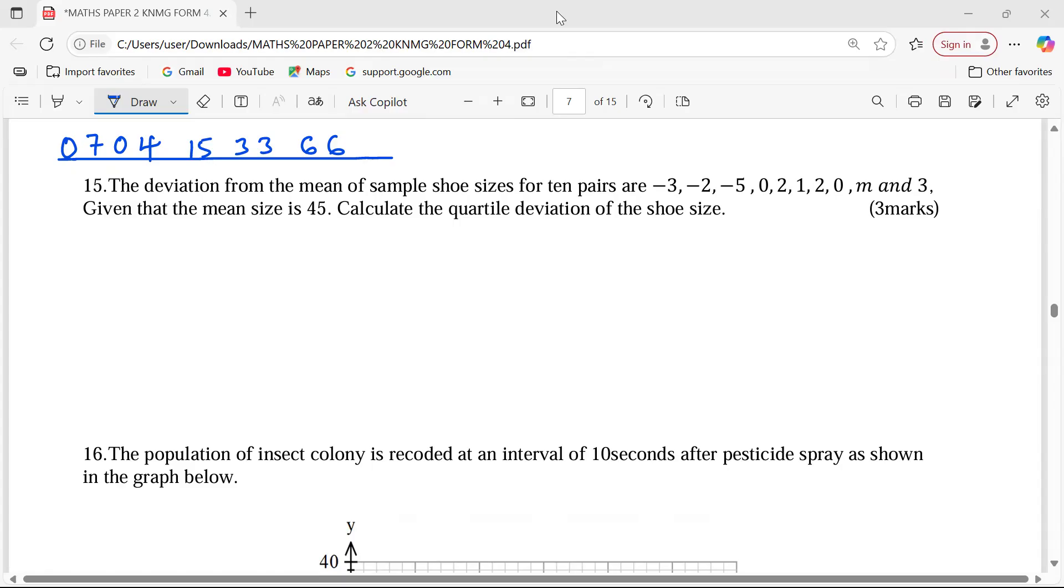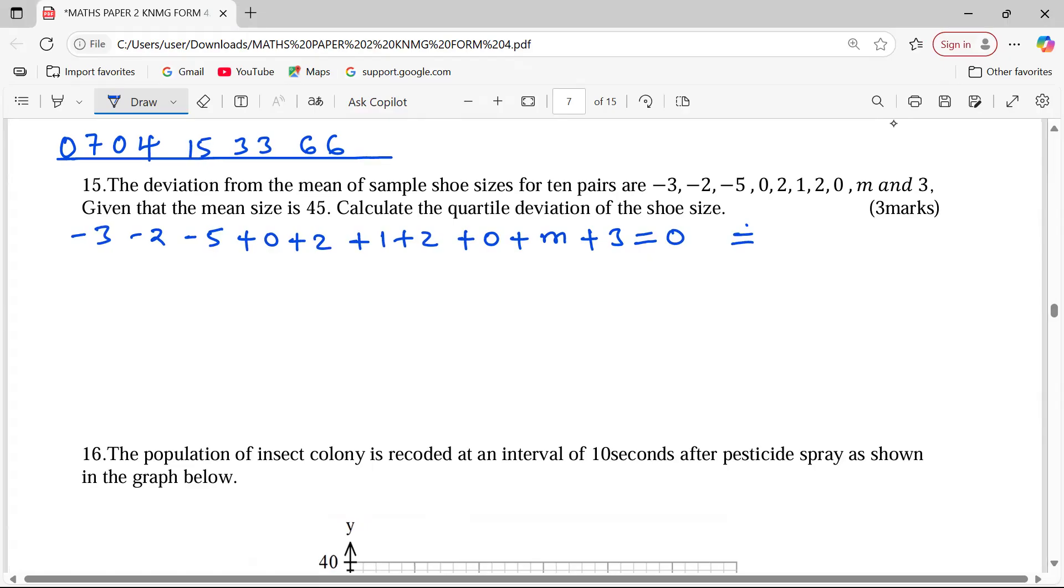Something that you are supposed to understand here before you subscribe to this channel is that the summation of all the deviations usually equals 0. All deviations from the mean must add up to 0. So negative 3, negative 2, negative 5, 0, 2, 1, 2, 0, m, and 3, all of them must give us 0. So through this we can find the value of m.